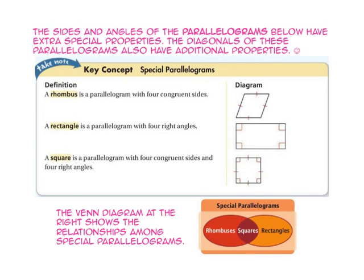The sides and angles of the parallelograms below have extra special properties, and the diagonals of these parallelograms also have additional properties. A rhombus is a parallelogram with four congruent sides. A rectangle is a parallelogram with four right angles. A square is a parallelogram with both four congruent sides and four right angles — it has all the properties of the rhombus and all the properties of the rectangle, as shown in the Venn diagram.